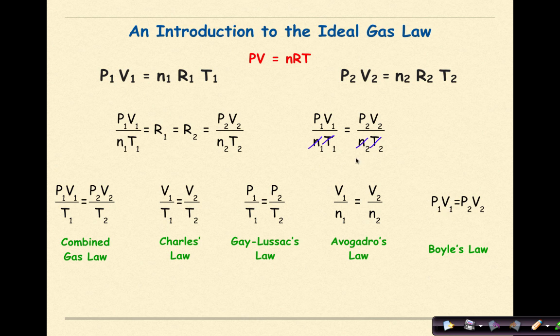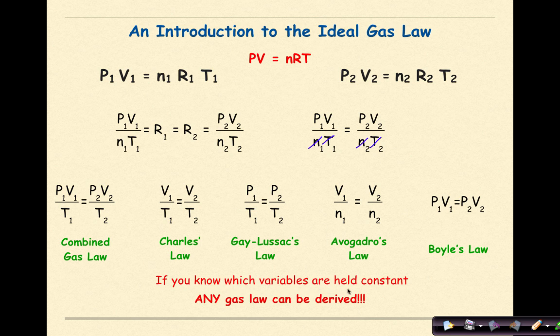So the big idea here is that if you know PV equals nRT, which is on your reference table, and you set the two gas constants equal to each other in two situations, such as an initial and final, you hold different variables constant, you can pretty much derive any one of these gas laws as needed. If you know which variables are held constant, any gas law can be derived.